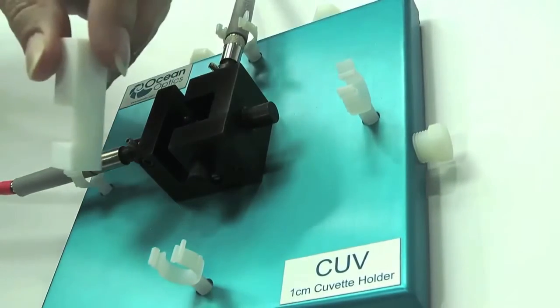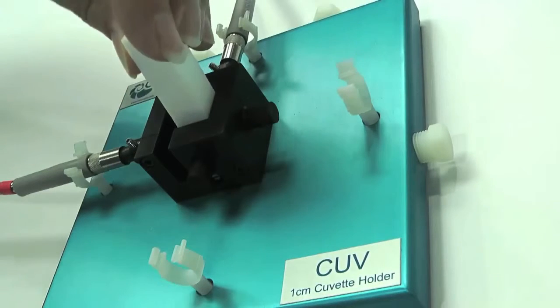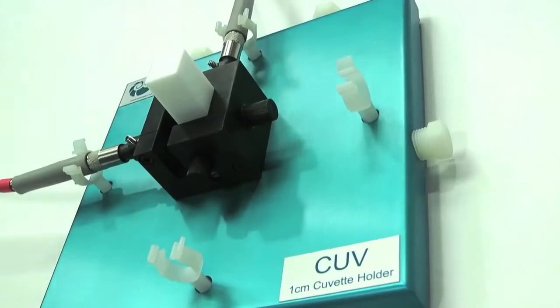The CVD diffuse reflectance standard can be inserted into the cuvette holder with the diagonal surface facing towards the two fibers in order to take a reference.